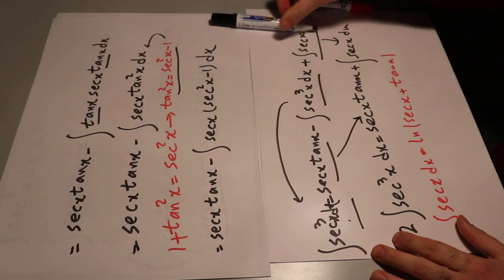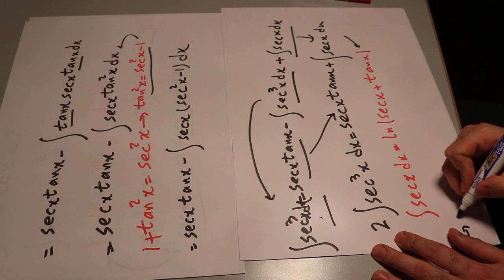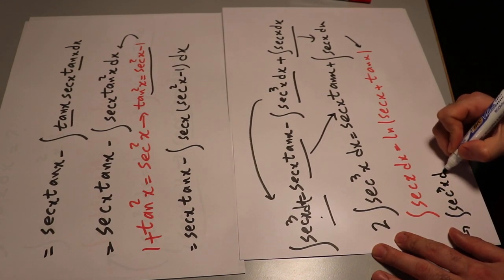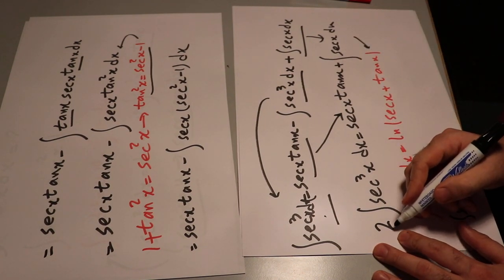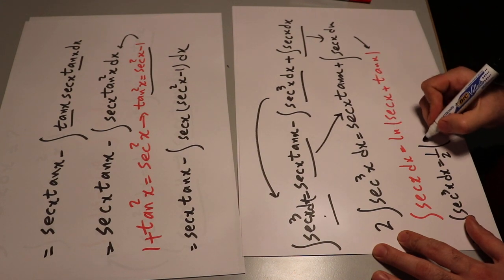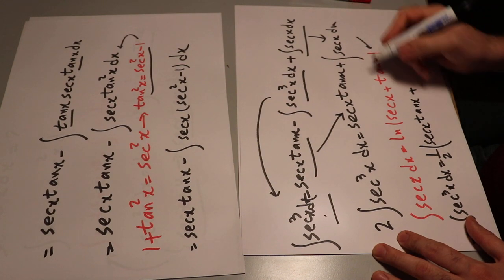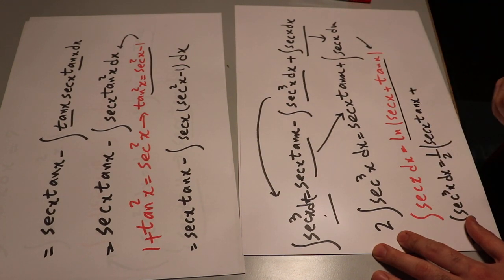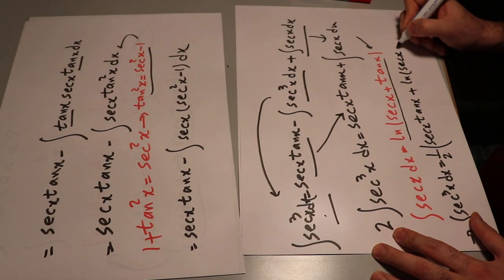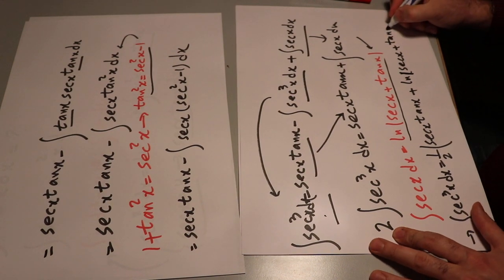So all you need to do is substitute this integral with that expression. Therefore, the integral of secant³x dx will be equal to — I divide everything by 2 — one-half times secant x tangent x plus one-half times this integral, and the solution of this integral we know from the integral table.